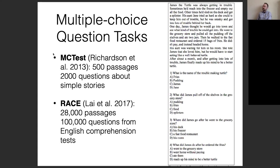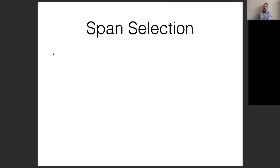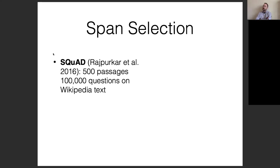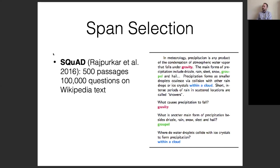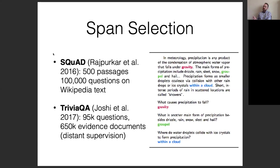In addition to multiple choice, there are span selection tasks. The most famous variety is SQuAD, which has 500 passages and 100,000 questions on Wikipedia text. For example, given a passage about meteorology — 'precipitation is any product of the condensation of atmospheric water vapor that falls under gravity' — a question like 'what causes precipitation to fall?' requires selecting 'gravity' as the span within the passage. There's also TriviaQA, which has 95,000 questions and 650,000 evidence documents — a larger-scale and broader version of span selection.